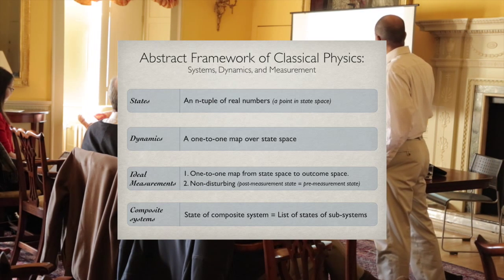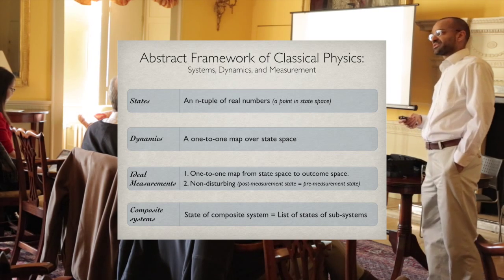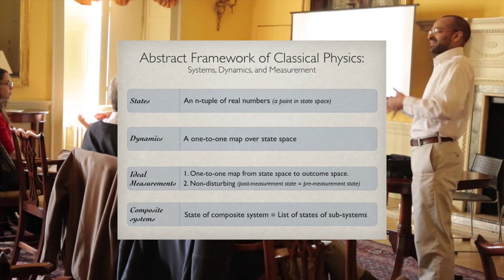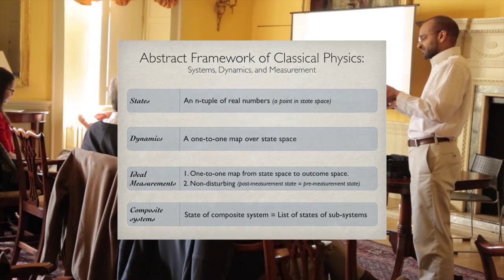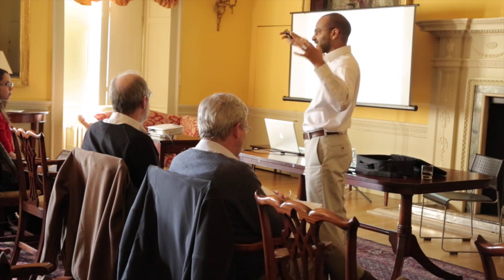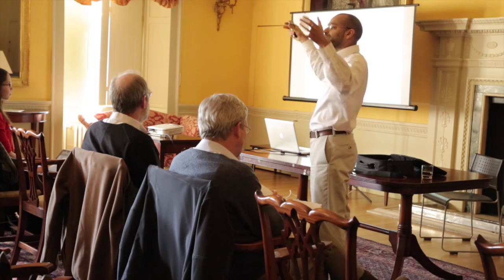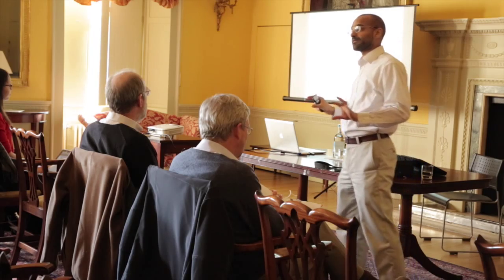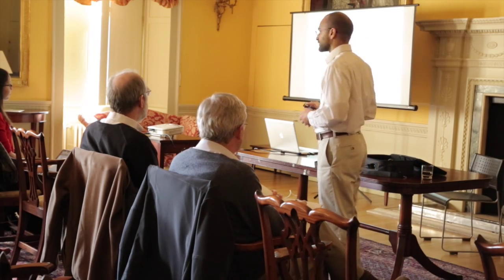This rather crucial feature: composite systems can be viewed as composites of individual systems, so the state of the composite system can be specified by specifying the states of the individual systems. This is crucial because it means finite beings like ourselves can study the universe in pieces, aggregate that knowledge, and form knowledge of the whole without losing anything.